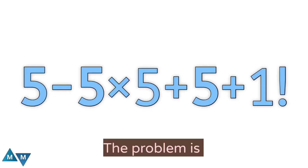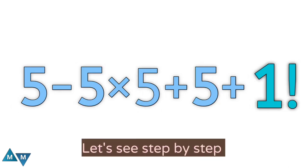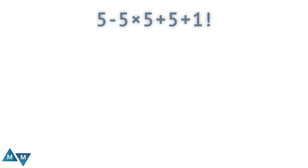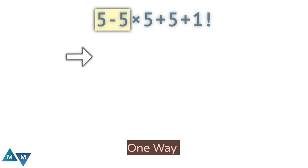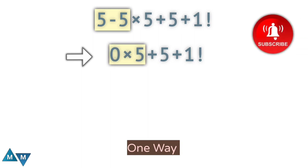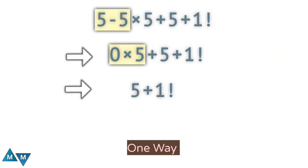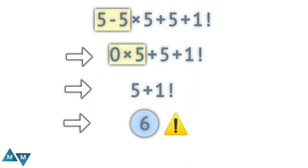So here is the last challenge. The problem is 5 minus 5 times 5 plus 5 plus 1 factorial. We've seen a lot of people do it the following way: 5 minus 5 is 0, so it becomes 0 times 5 plus 5 plus 1 factorial. Then 0 times 5 gives 0, leaving 5 plus 1 factorial. Many people miss the factorial sign entirely and write 5 plus 1 equals 6, so the answer is 6 — wrong. This is the wrong way to solve it.